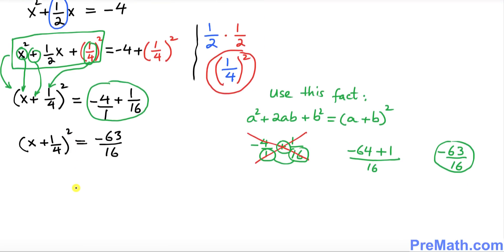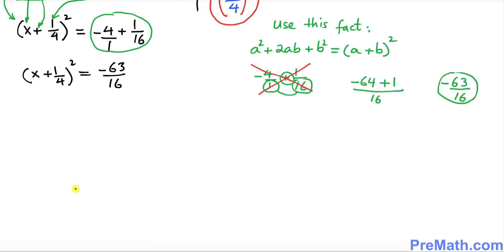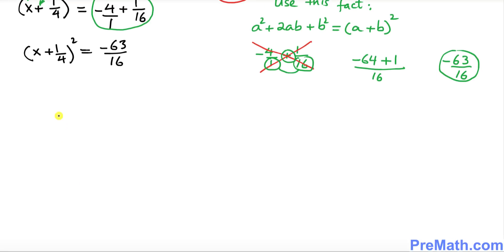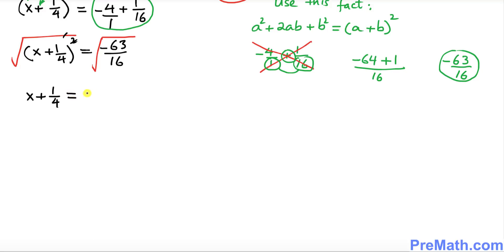So far so good. Now let's go ahead and remove the square by taking the square root on both sides. The square and square root undo each other and cancel out, leaving us with x plus 1 over 4 equals positive or negative the square root of negative 63 over 16.